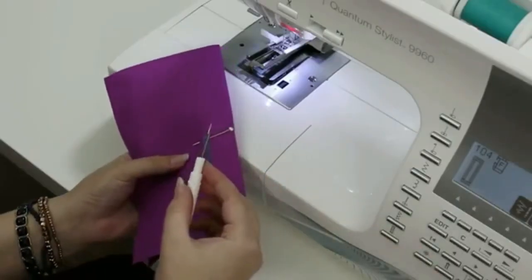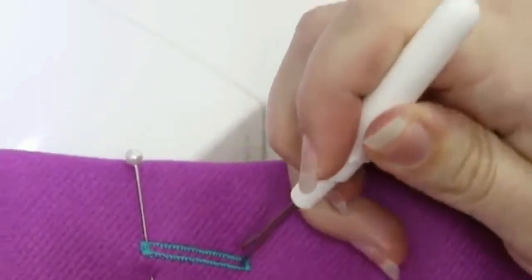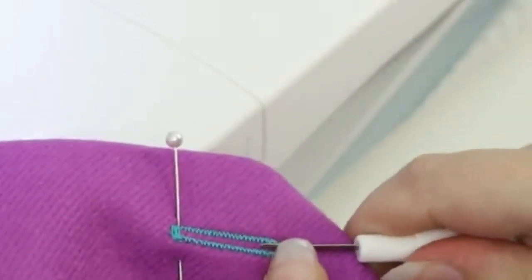In your accessory tray is a seam ripper, and this is also super useful for opening up buttonholes. Insert it at the bottom and carefully work your way up to the top.